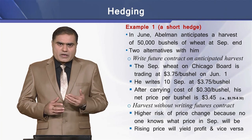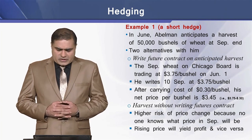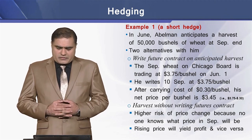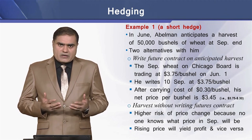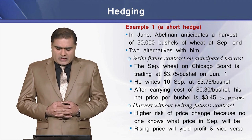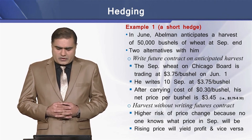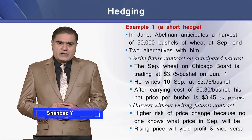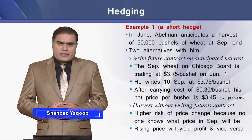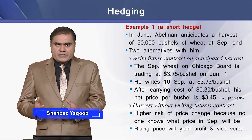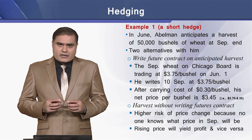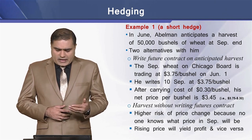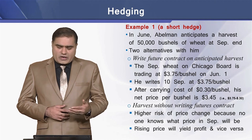Now there are two alternatives for him. First, he can write future contracts on the anticipated wheat harvest. The September wheat on the Chicago Board — a financial trading exchange — is traded at $3.75 per bushel on January 1. The farmer can write 10 contracts on September wheat at the rate of $3.75 per bushel.